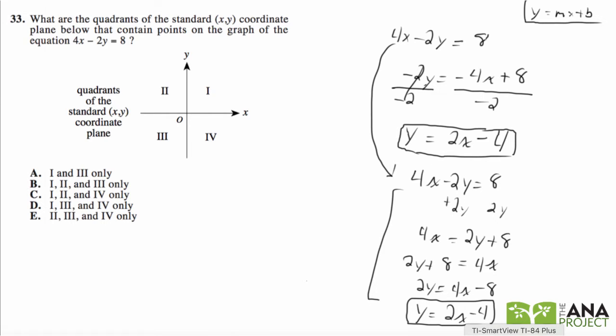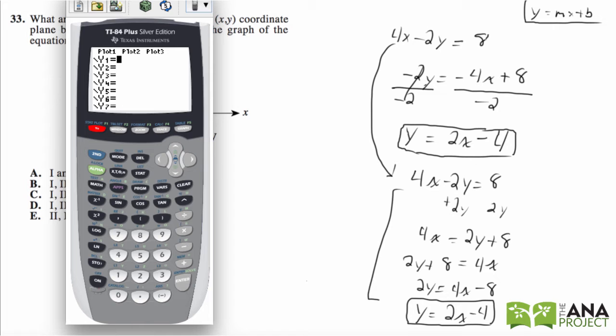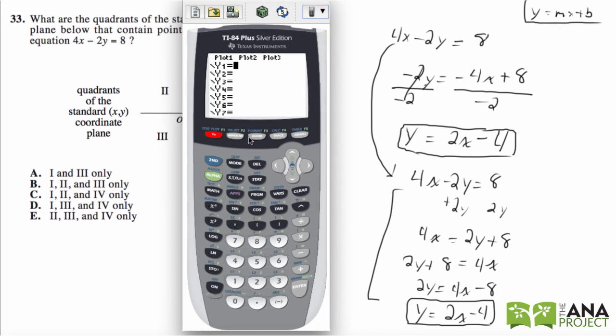Now, we can just punch it into our graphing calculator. y equals 2x minus 4. We press graph. And there's our line.